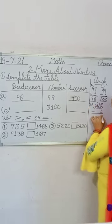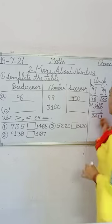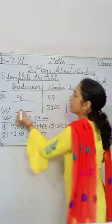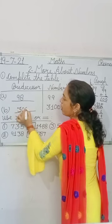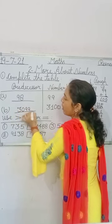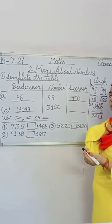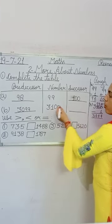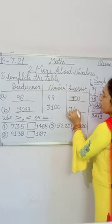After regrouping, 10 minus 1 is 9, giving us 3099. That means 3099 is the predecessor of 3100. Now for the successor number, we add 1: 3100 plus 1 equals 3101.